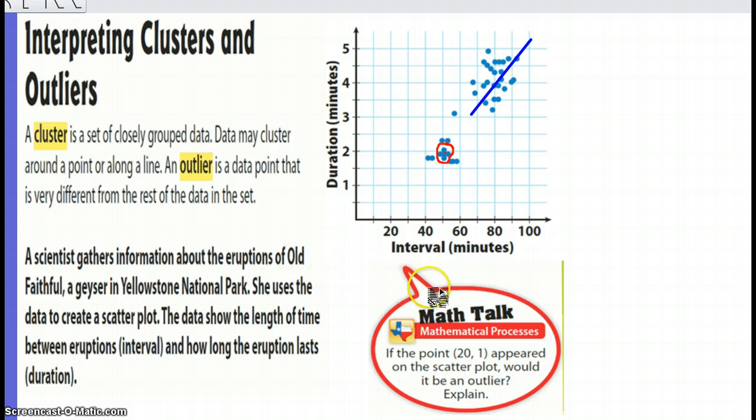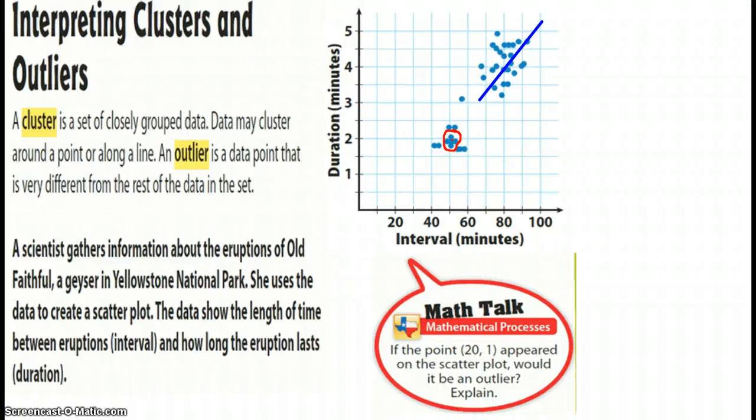Well anyway, there's something else that we want to take a look at. And this is just for future reference as we go along within the lesson. If the point 20 and 1 appears on a scatter plot, so we're talking about x is 20, or should we say intervals in minutes is 20, and duration is 1. So if this particular point appeared on the scatter plot, would it be an outlier? So this is something I want you to contemplate as we go forward. Look back at the definition where it says an outlier is a data point that is very different from the rest of the data point. So think about this as we go on with the particular lesson.